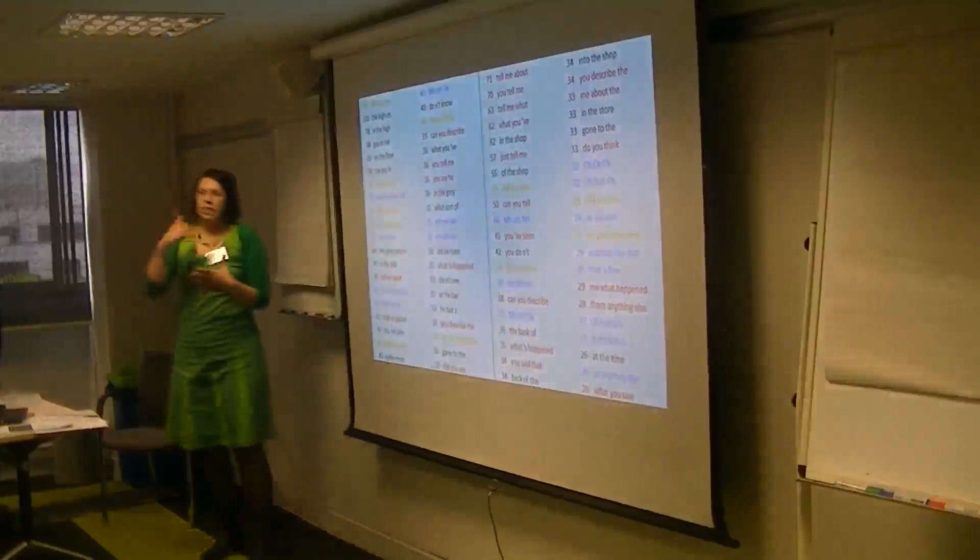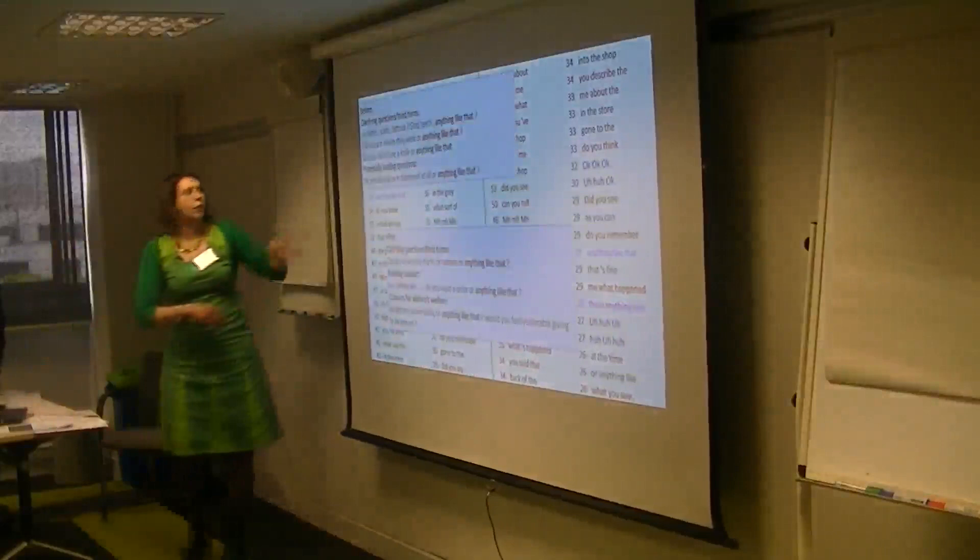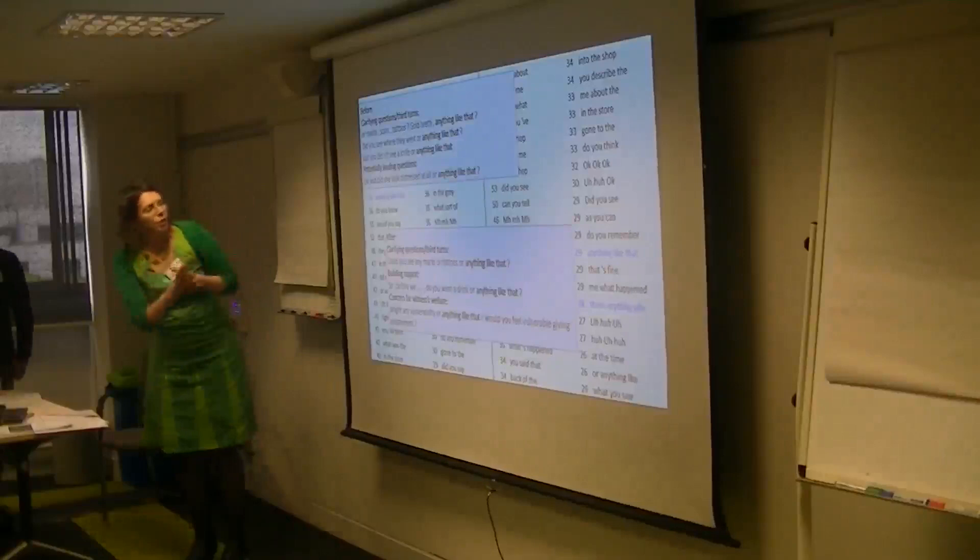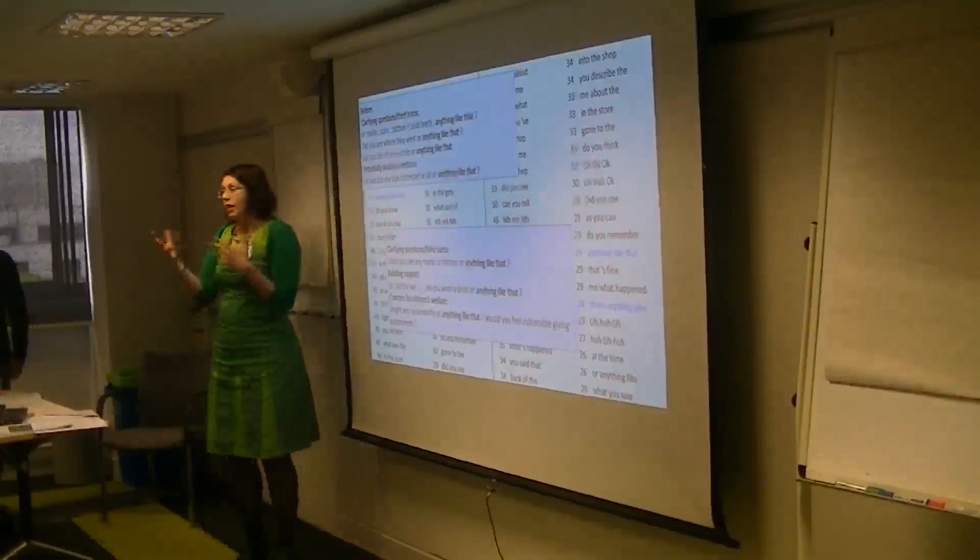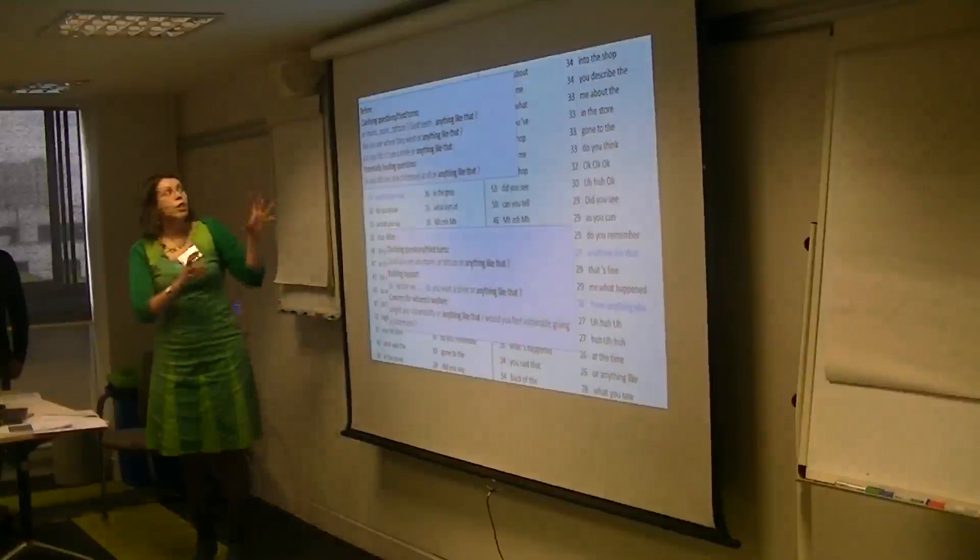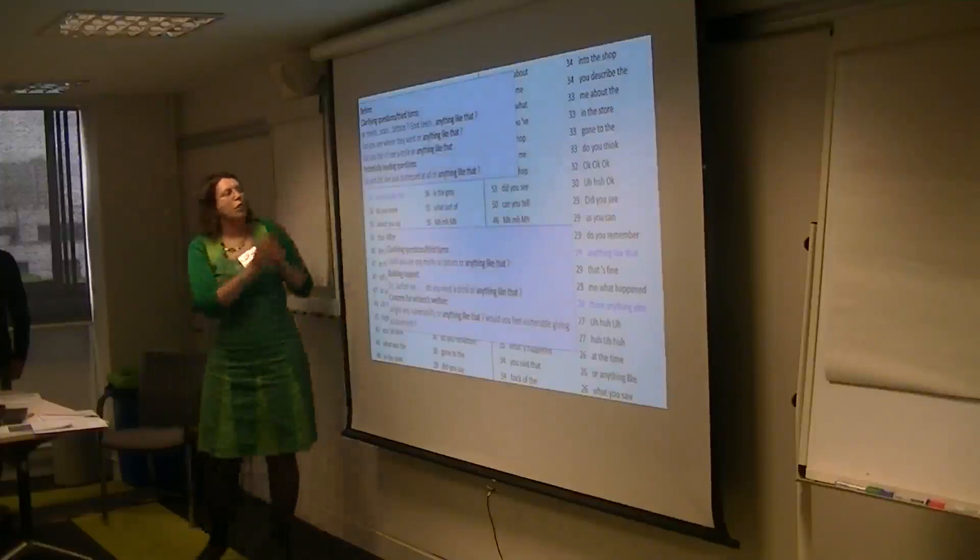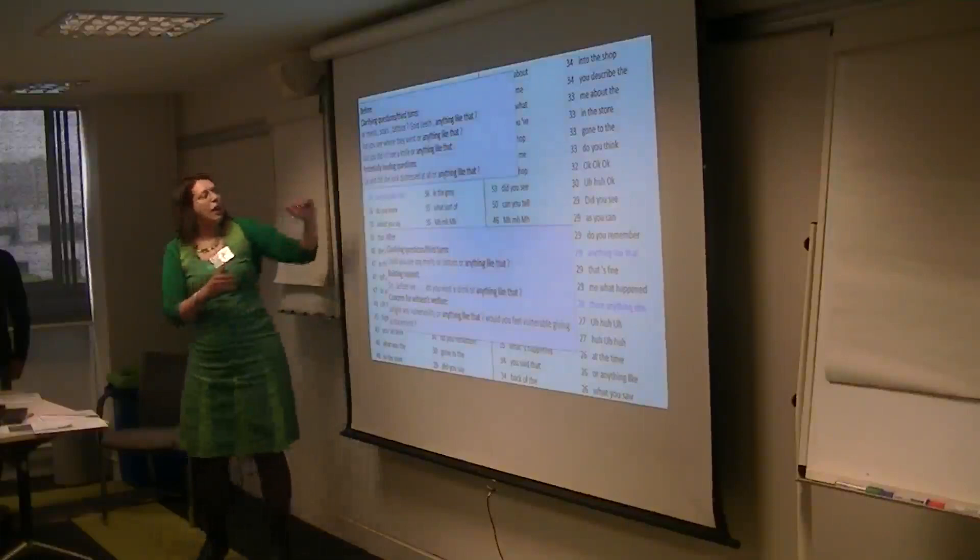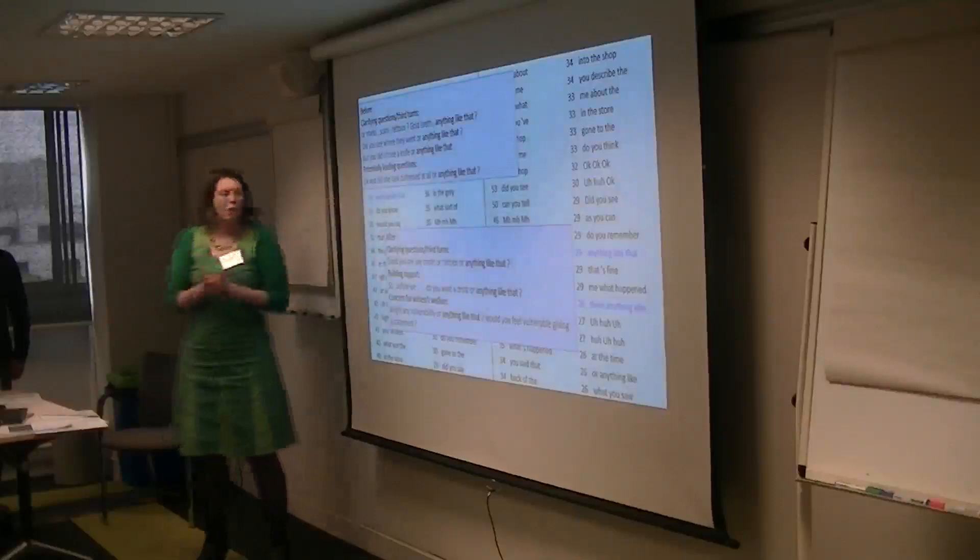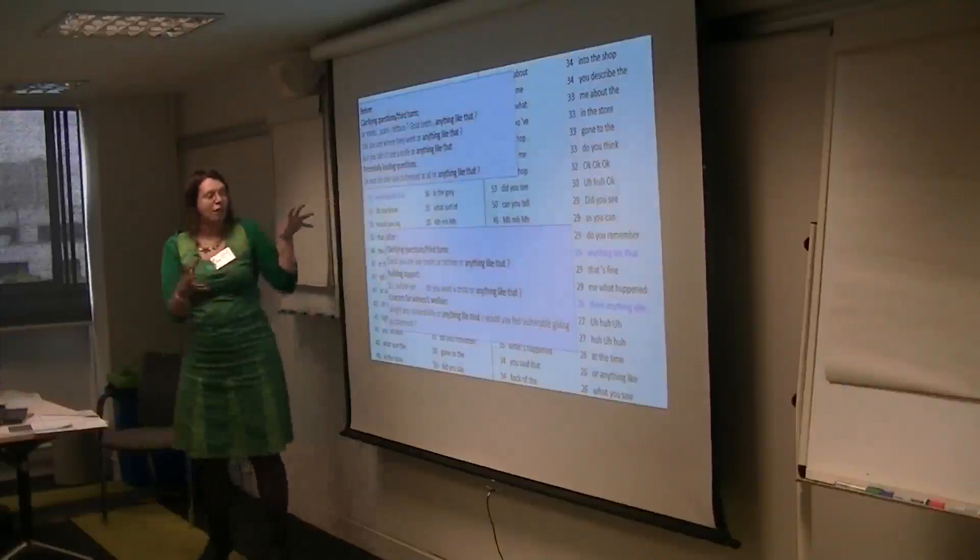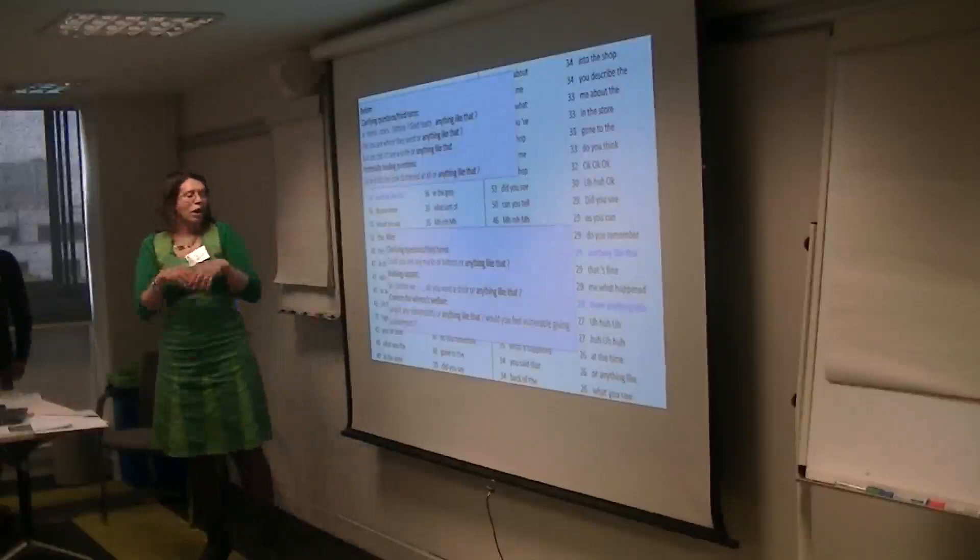And then we just wanted to show you two examples, for instance anything like that. So how anything like that is used. In the before corpus it is predominantly used for clarifying questions. So closed questions, masks, scarves, tattoos, gold teeth, anything like that. That's the main function. But also a few questions which could potentially be considered as leading questions. Okay, and did she look distressed at all or anything like that, which is more a leading question. But in the after corpus the number of clarifying questions with anything like that reduces significantly, and there are more questions for building rapport or expressing concern for the witness's welfare. So things like, do you want a drink or anything like that? Any vulnerability or anything like that, you feel vulnerable.